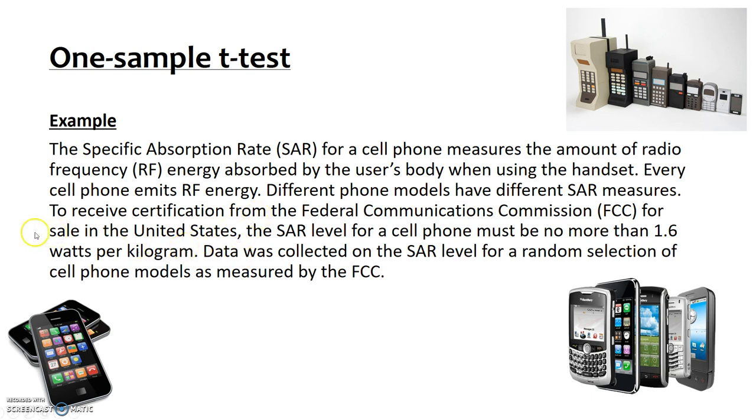To receive certification from the FCC to be sold in the United States, these SAR levels for cell phones must be less than 1.6 watts per kilogram. To investigate whether the average watts per kilogram is less than 1.6, data was collected and we will conduct a one sample t-test to determine the results.